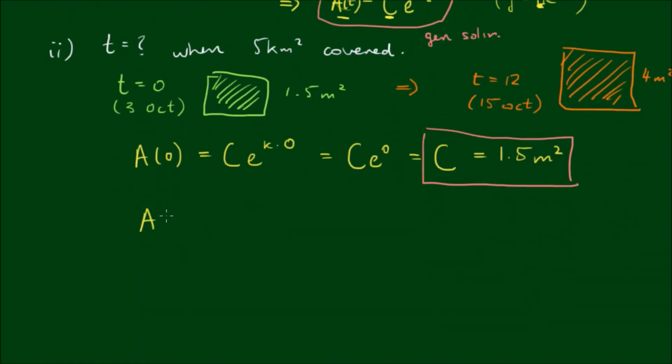We also know then that at 12 days, so A of 12, C was equal to 1.5 E to the K times 12 and the area then was equal to 4 square meters. So if we rearrange we have E to the 12K is equal to 4 divided by 1.5.